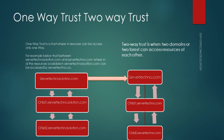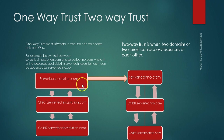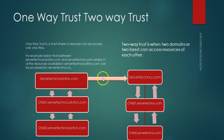Two-way trust is when two domains or two forests can access resources of each other. Both admins have given permission to each other's forest or domain to access anything. So if there is a scanner installed on servertechnos.com, servertechnosolution.com can access it, and so on and so forth.